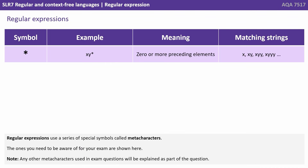The first symbol is the star or asterisk. An example might be x, y*. This means zero or more of the preceding element before the star. So it would match: x, xy, xyy, xyyy, etc.